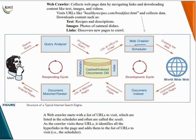Next, the web crawler and scheduler. The web crawler collects web page data by navigating links and downloading contents like text, images, and videos. The crawler not only crawls the internet following hyperlinks but also downloads content such as text, images, and videos, visiting URLs like healthrecipes.com/breakfast.html and collecting data including text, images, and links.